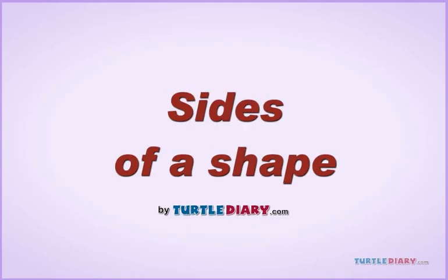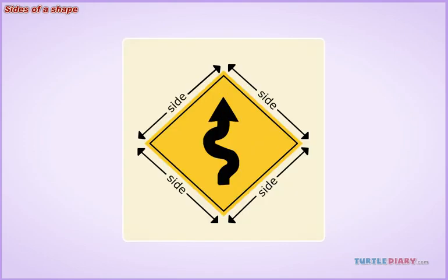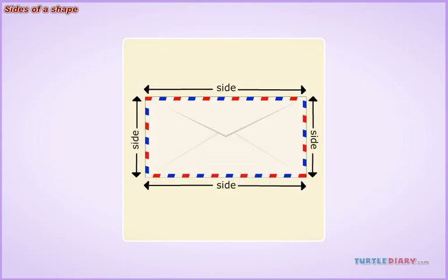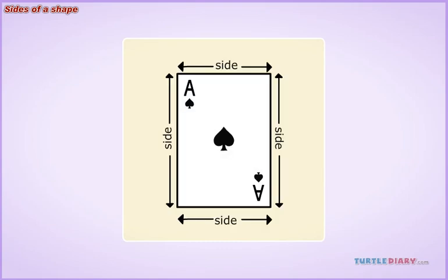Sides of a Shape. Most shapes are identified by the number of sides they have. When you look at a shape, you know what kind of shape it is because of the number of sides it has.